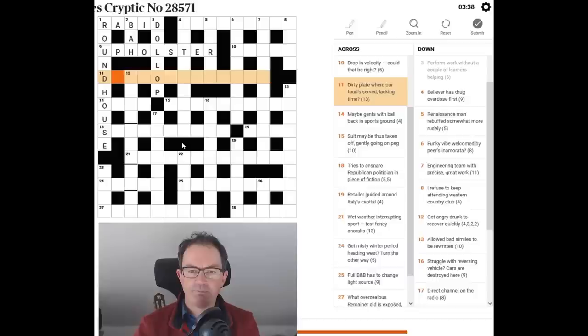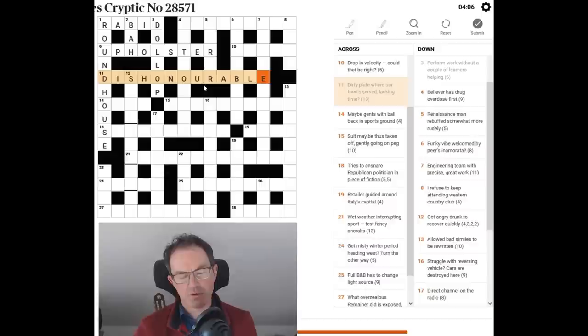Let's try 11 across. Dirty plate where our foods served. Dish lacking time. Dirty dishonourable. I quite like dishonourable. In my mind I'm thinking it's got our table in it without a T. But I haven't understood it. So let me just put dishonourable in there. Obviously with the British spelling you won't see American spellings for things like dishonourable unless it signals it in the clue.